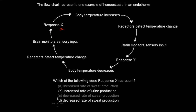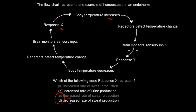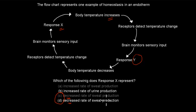I realized I made a mistake and repeated the same option twice. The actual answer was a decreased rate of sweat production, so if you answered C or D, you are correct. The reason is that we started with too high a temperature, so response Y was to increase sweating to bring temperature down. Once it decreases, we switch off — we decrease our rate of sweat production so the temperature doesn't drop too low. So X was a decrease in sweat production.